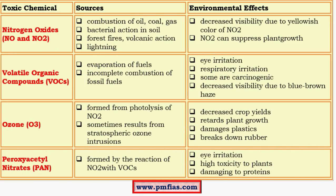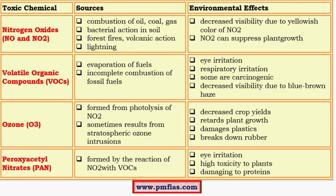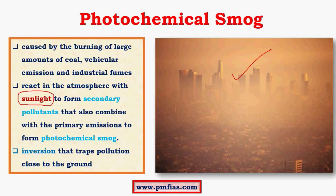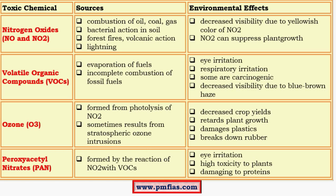This table indicates the formation and effects of different kinds of pollutants. Nitrogen oxides are formed due to combustion of oil, coal and gas. Bacterial action in soil, forest fires and volcanic action also liberate nitrogen oxides — this is a very important point. When it comes to sulfur, coal combustion is the most important source, whereas for nitrogen oxides the most important factor is forest fires and volcanic action. Lightning also creates nitrogen oxides. One key environmental effect is decreased visibility due to the yellowish color of NO2, which can also suppress plant growth.